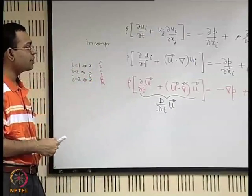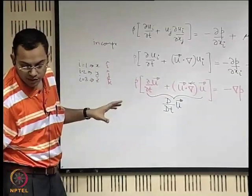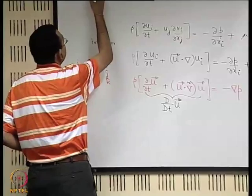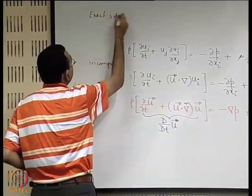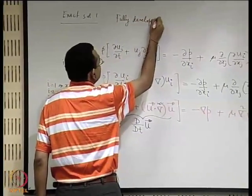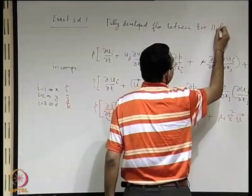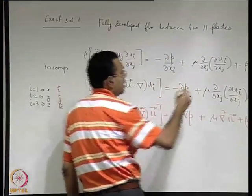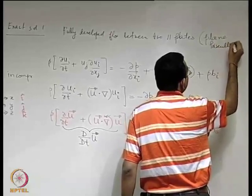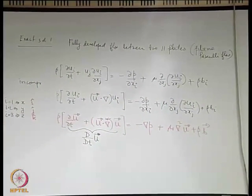We will start with the exact solutions, coming down to a much more simplified version of this form. Exact solution 1: we will consider something called fully developed flow between two parallel plates. This has a technical name — it is known as plane Poiseuille flow. We will look into this special case.